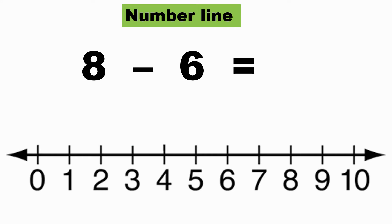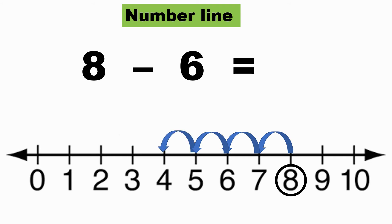Now what is eight minus six? What do I start with — six or eight? I start with eight, because eight is written first. Since this is subtraction I need to move to the left by six places: one, two, three, four, five, six. I jump six times and I come to two. So eight minus six gives me two.